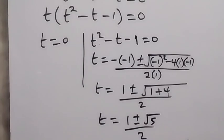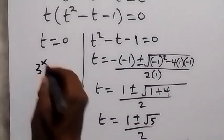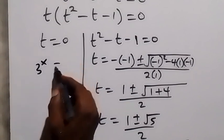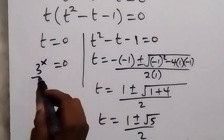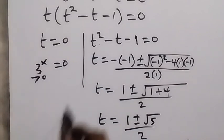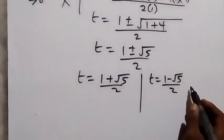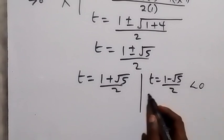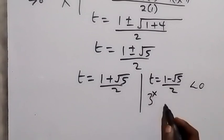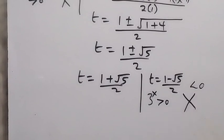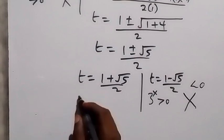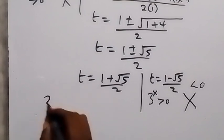We represented t as 3 raised to power x, and we understand that 3 raised to power x will always be greater than zero. So where t equals zero, 3 raised to power x cannot be zero. Also, the value t equals one minus root five over two is less than zero, so there is no solution there either. Therefore we take t equals one plus root five over two.